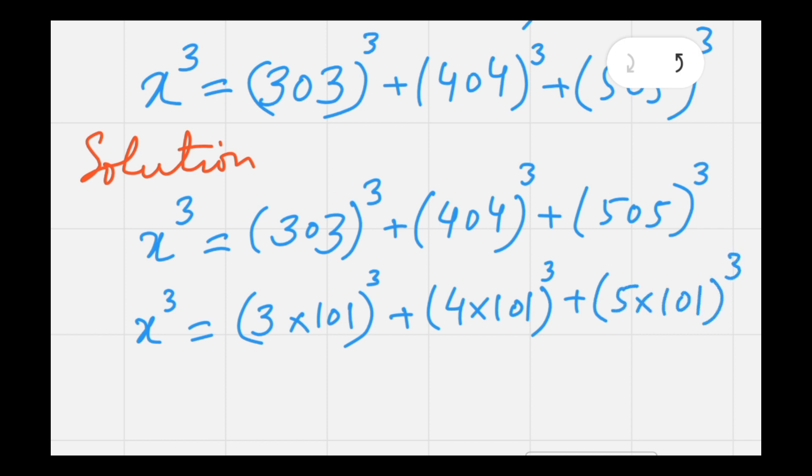Applying exponent law, we can share the cube to both factors. That is 3 cubed times 101 cubed, plus 4 cubed times 101 cubed, plus 5 cubed times 101 cubed.